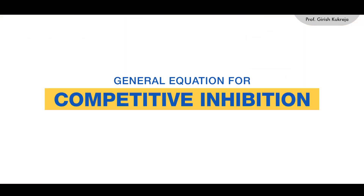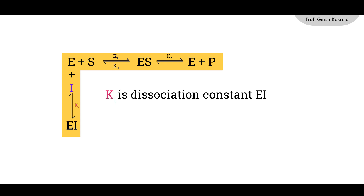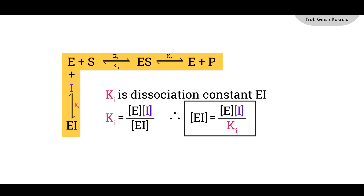The general equation for typical competitive inhibition includes Ki, which is the dissociation constant for the EI complex. From the definition of Ki: Ki = (E · I) / EI. Rearranging, we get EI = (E · I) / Ki.